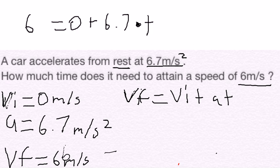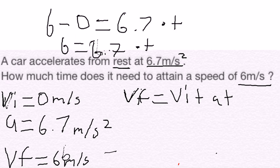Now that we have the problem set up, we just do the math. 6 minus 0 is still 6. Then you're left with 6 equals 6.7 times T.